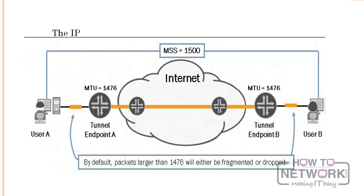When packets traverse a GRE tunnel, the maximum packet size is reduced from 1500 to 1476 bytes, to account for the additional overhead of 24 bytes: 4 bytes for the GRE header plus 20 bytes for the IP header. In this situation, if either host sends a packet larger than 1476, the packet must be fragmented, typically by one of the tunnel endpoints, to cross the tunnel. Unfortunately, the hosts do not realize this because they only communicate with one another and agree upon the 1500 value.